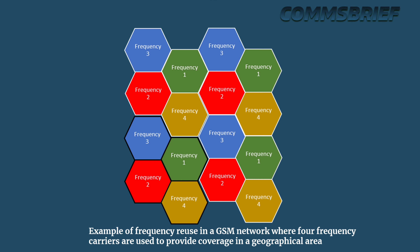Before CDMA, mobile networks were using a combination of FDMA and TDMA for radio transmission — that is what GSM and DAMPS networks used. The challenge with that is the potential interference caused by the same or adjacent frequencies. These interferences are called co-channel and adjacent channel interference. As a result, when RF engineers are planning the cells, they make sure they reuse the frequency channels carefully to ensure the same or adjacent channels are not used in neighboring cells.